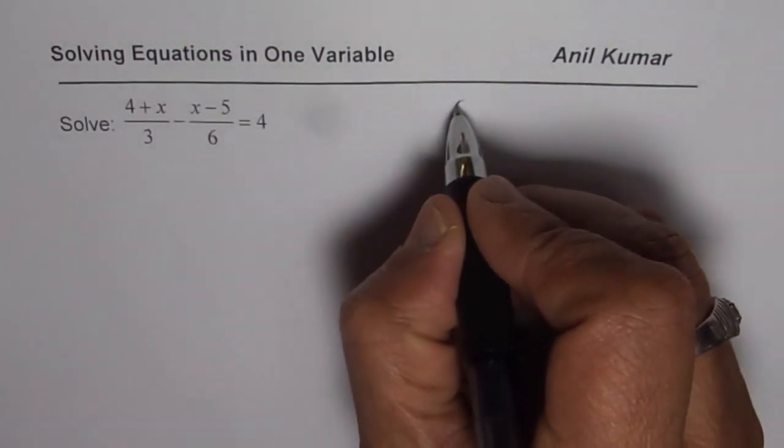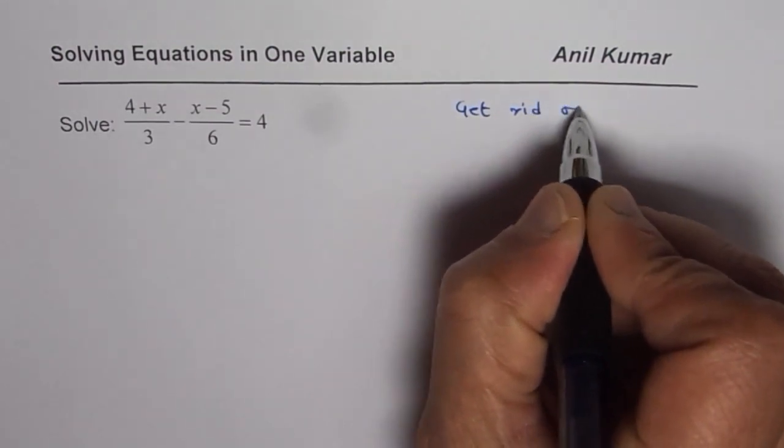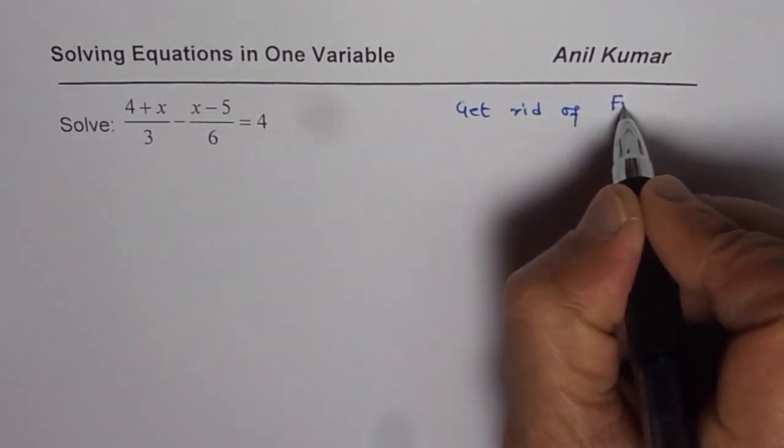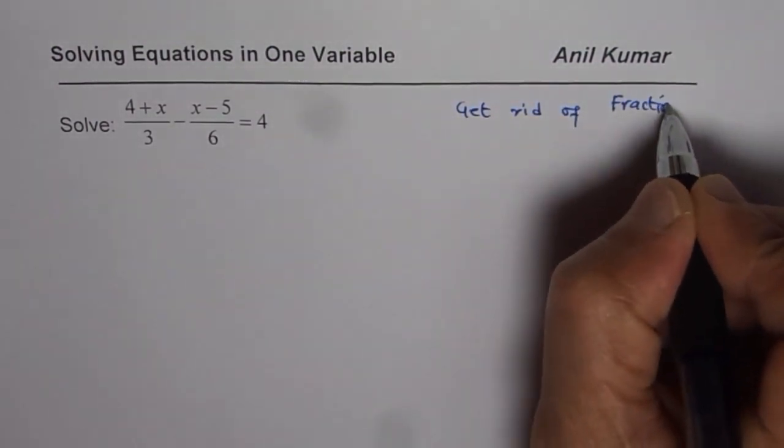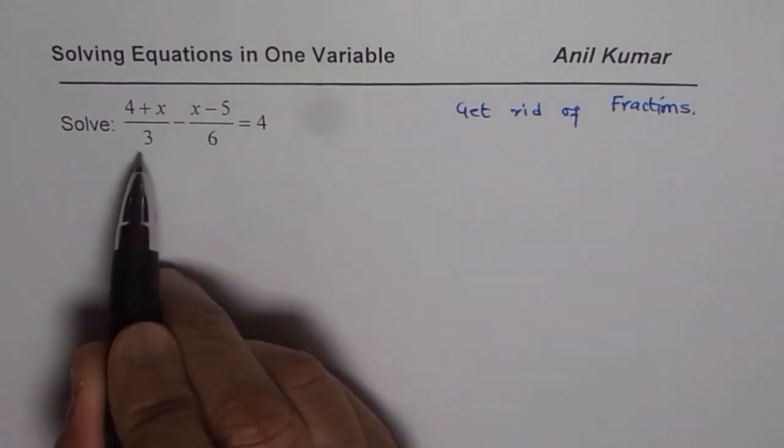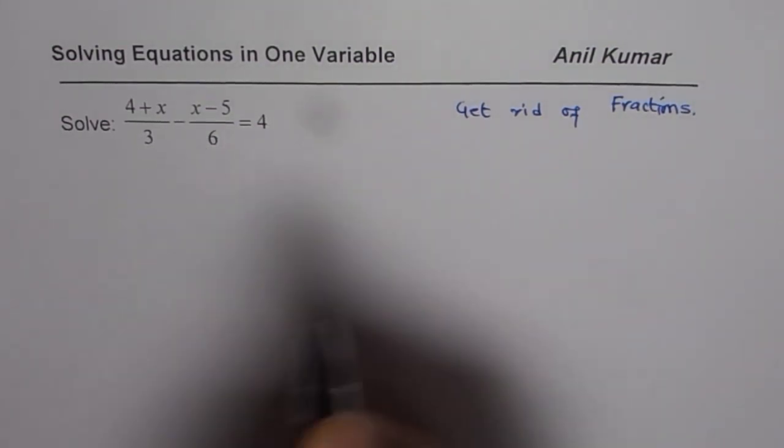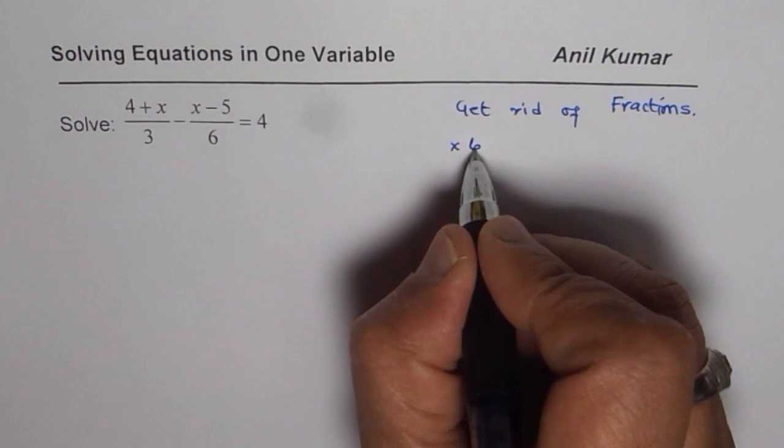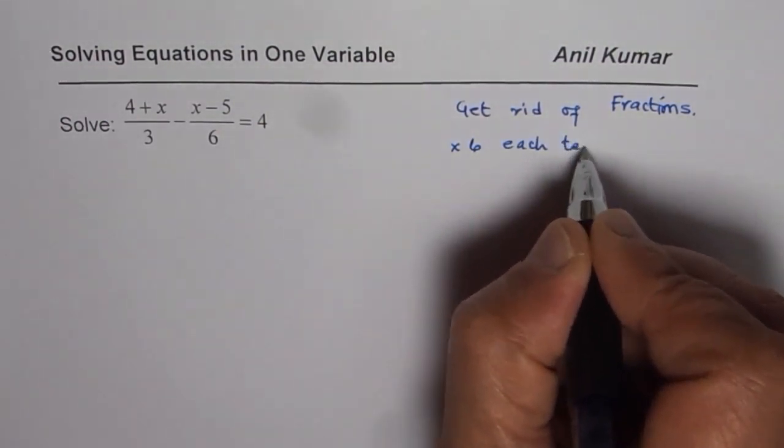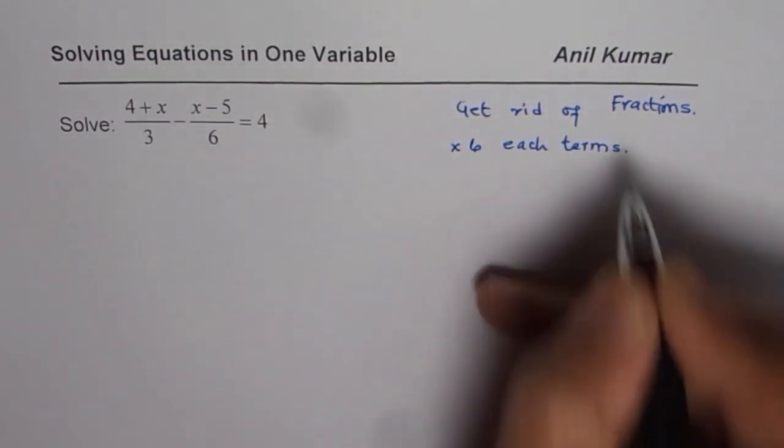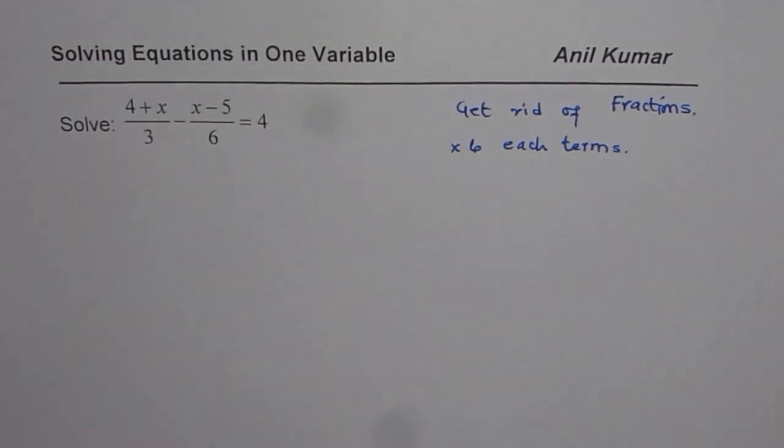First step is to get rid of fractions. How do we do that? The common denominator is 6, so we can multiply each term by 6. That helps to get rid of fractions. That is what we are going to do now.